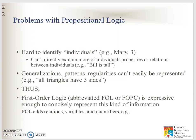What is the problem with propositional logic? It is hard to identify individuals. For example, we have Mary, age 3 years old. We cannot directly explain individual properties or relations between individuals — for example, Bill is tall, or Mary's age is 3. To say Ahmad is tall, Ali is tall, and Abu is tall, all three require three separate variables in propositional logic. We cannot make one generalized sentence. Generalization, patterns, and regularities cannot easily be represented.